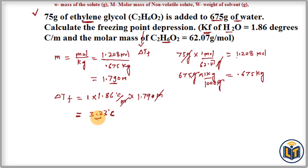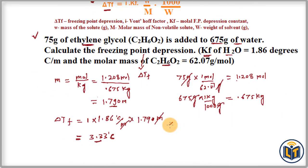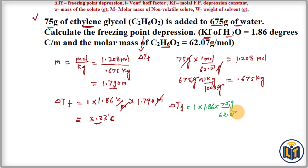Now let me apply the second formula to confirm the same result. Using ΔTf = i × Kf × (1000 × w) / (M × W): i = 1, Kf = 1.86, mass of solute w = 75 grams, molar mass M = 62.07 g/mol, and mass of solvent W = 675 grams.